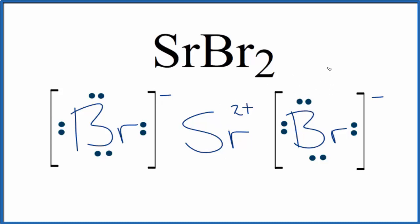Do note that with the Lewis structure for strontium bromide, if we had a crystal of strontium bromide, it would be a repeating pattern of this Lewis structure — we call that a formula unit. This shows us how strontium transferred an electron to each of the bromines to give us the Lewis structure for SrBr2. This is Dr. B — thanks for watching.